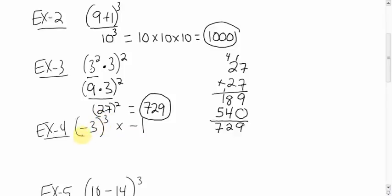Odd exponents give you negative answers. So it's negative 3 times negative 3 times negative 3, which is negative 27. Remember negative 3 times negative 3 times negative 3. That times that is 9. Bring down the negative 3. 9 times 3 is 27.